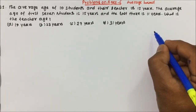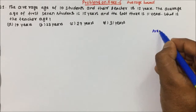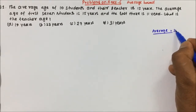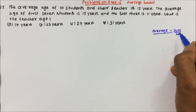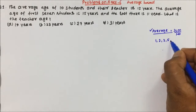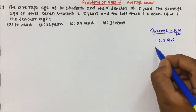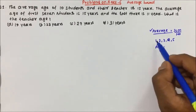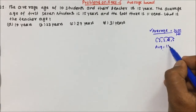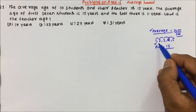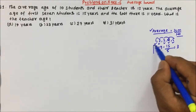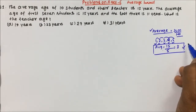Let's understand the concept of average. Average equals sum divided by number — there is only one formula throughout average. For example, if you calculate the average of 1, 2, 3, 4, and 5: the sum is 1+2+3+4+5 = 15, and the number of values is 5, so the average becomes 3.